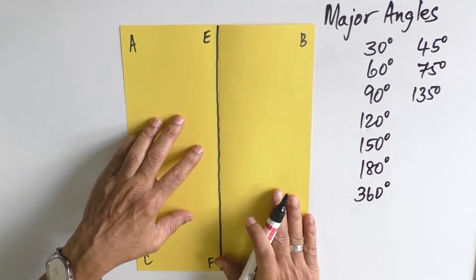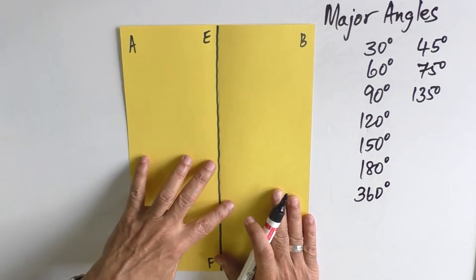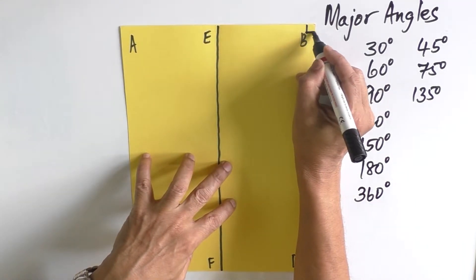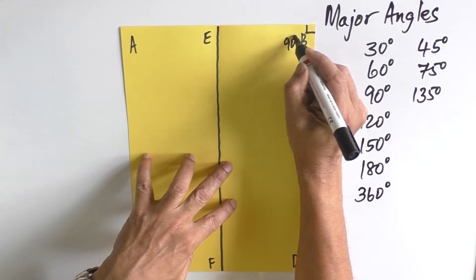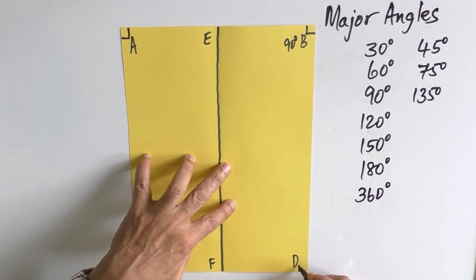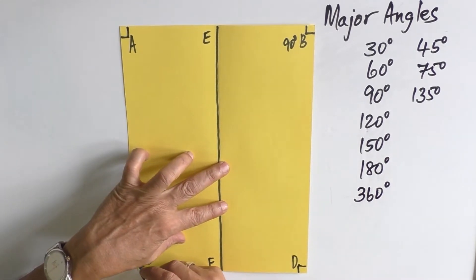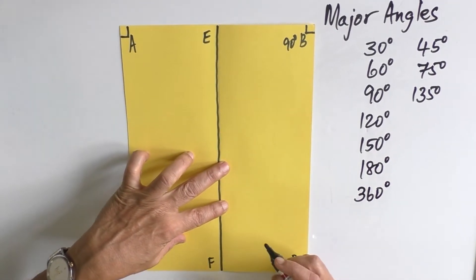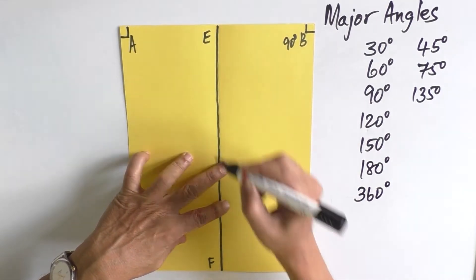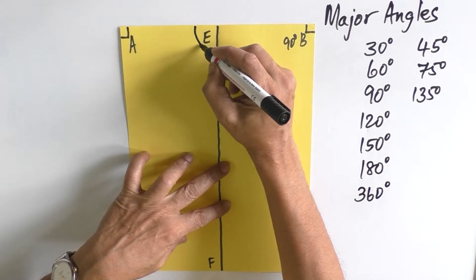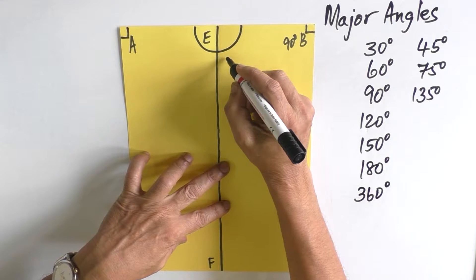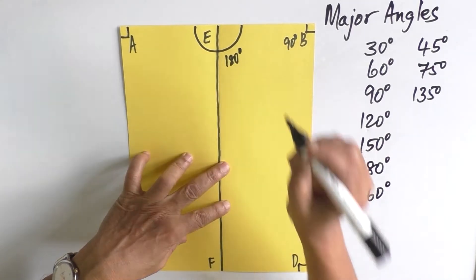Now, in this sheet we get two angles already. One is the right angle, that is 90 degrees. All four corners, the four vertices, have 90 degrees. The angle on a straight line is 180 degrees.